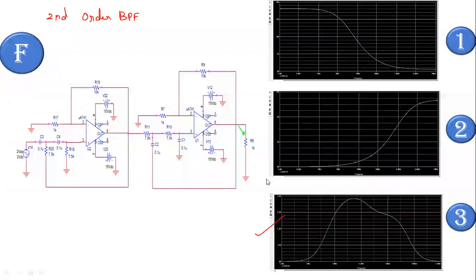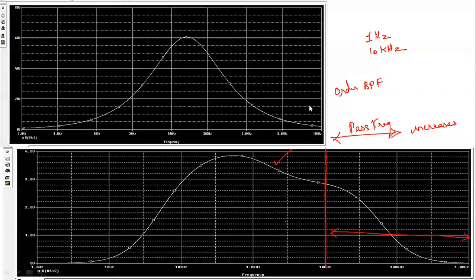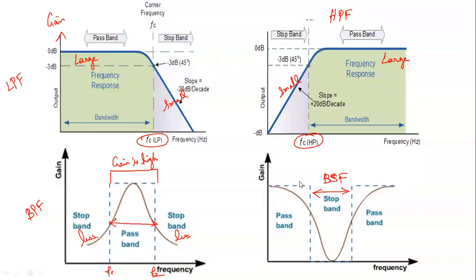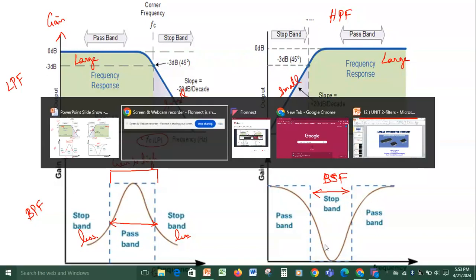Similarly, we can use a second order band pass filter. The two sections cascaded are: the first section being a second order high pass filter, and the second section being a second order low pass filter. A second order high pass filter followed by a second order low pass filter gives a wide band pass filter. The bottom graph is the first order and the top is the second order response. To summarize: we have seen frequency responses for low pass filter, high pass filter, band pass filter, and band stop filter. A band stop filter stops a particular range of frequencies and allows all other frequencies.